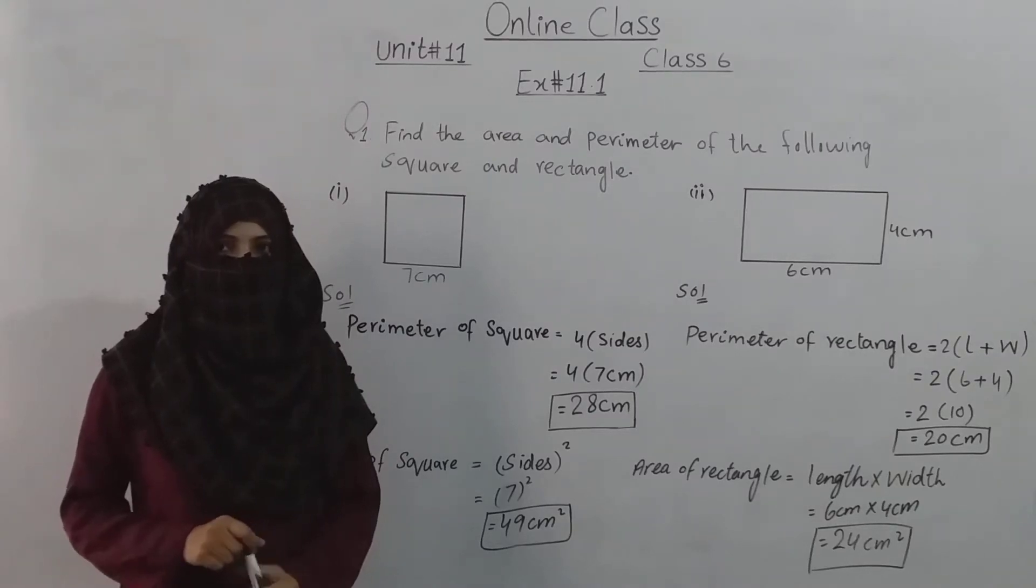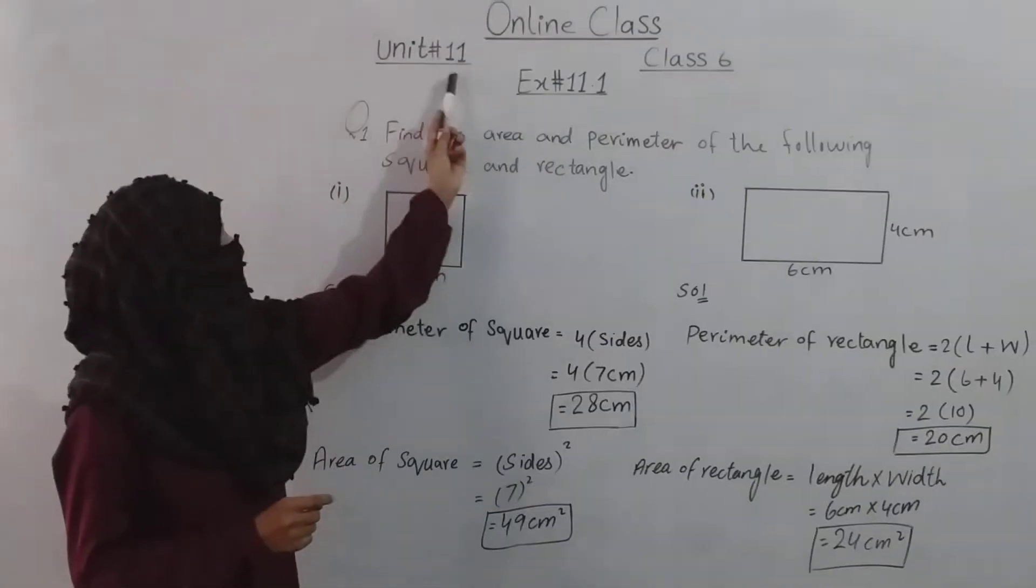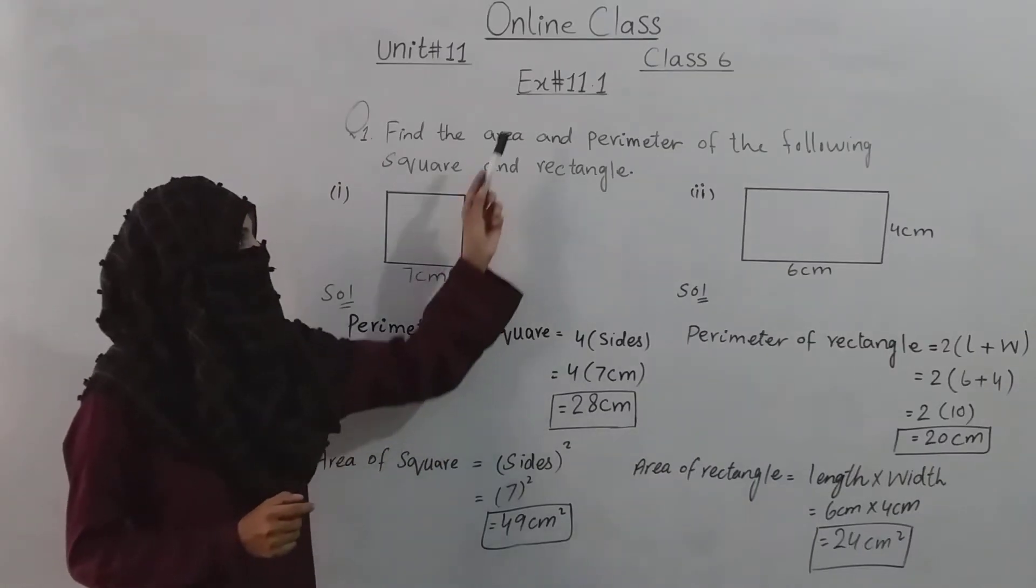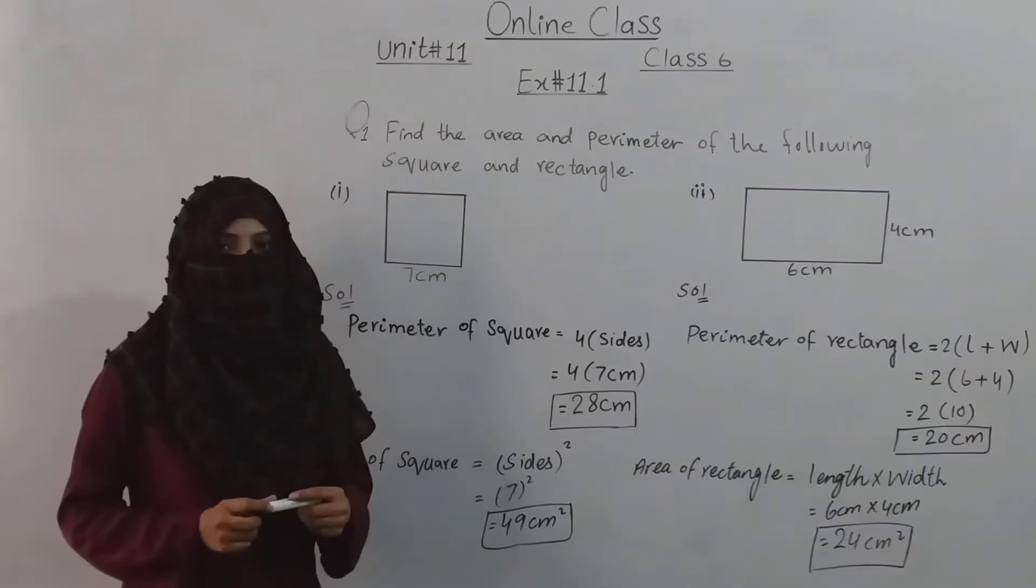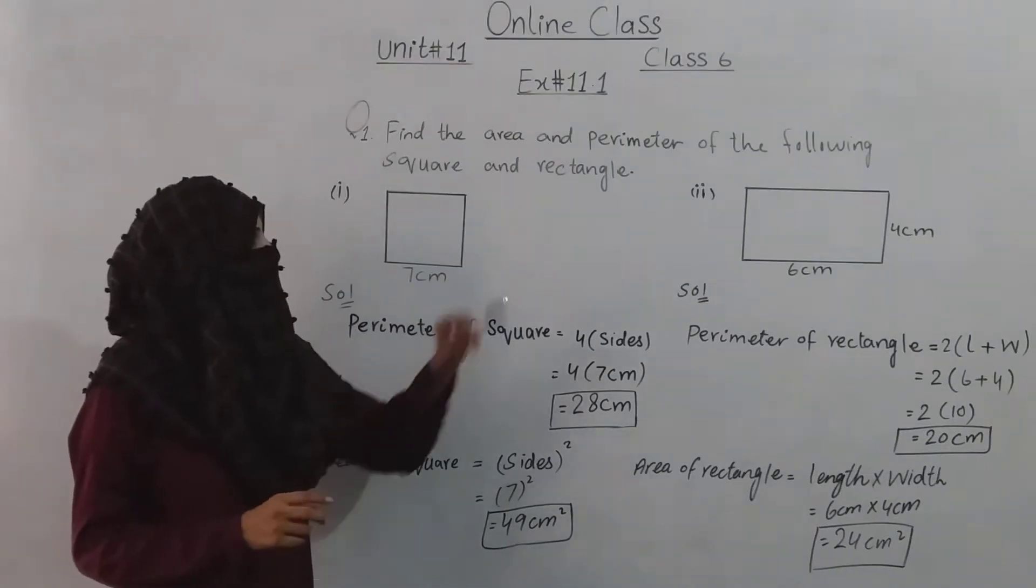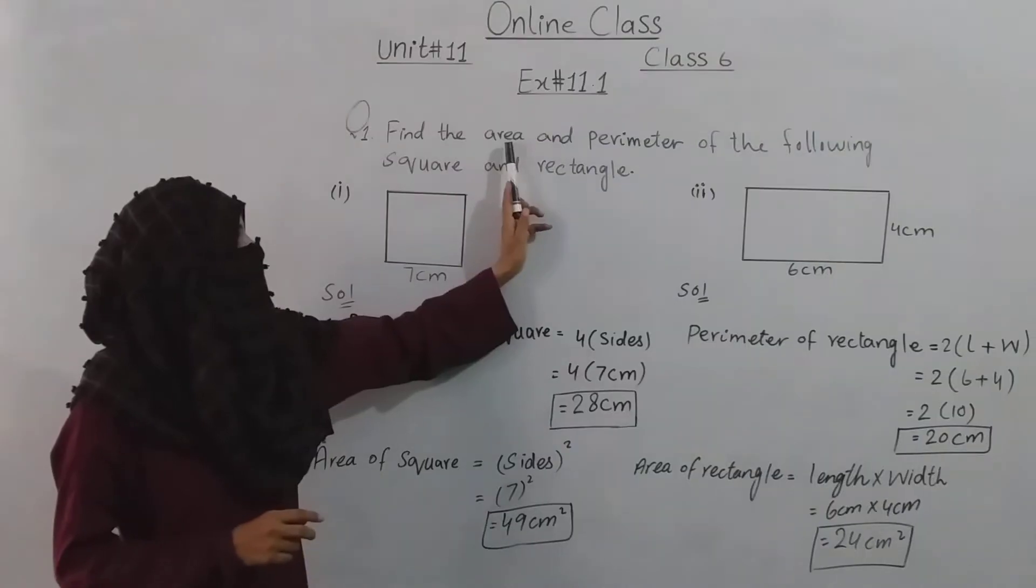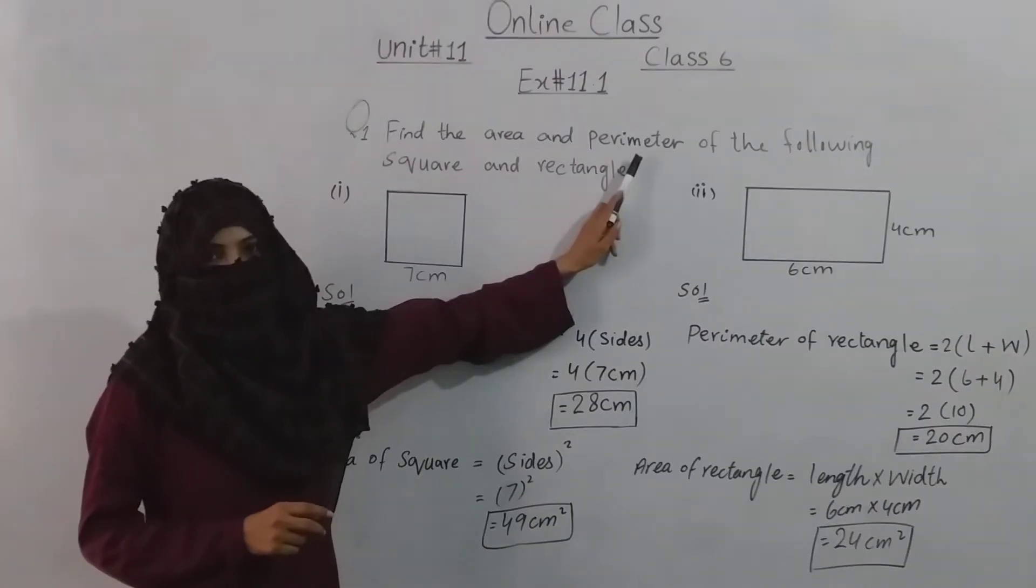Assalamualaikum dear students, how are you? I hope you all are fine by the grace of Almighty Allah. We are doing unit number 11. Today we will do exercise 11.1. Unit number 11 is about area and perimeter.